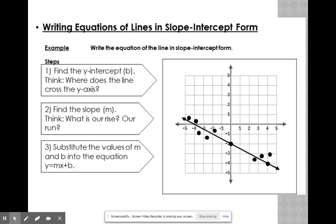So if we're looking at this, writing equations of line in slope-intercept form, we have steps. First, you find the y-intercept, which is your b. Think, where does the line cross the y-axis? On this particular question, the line crosses at negative 2.